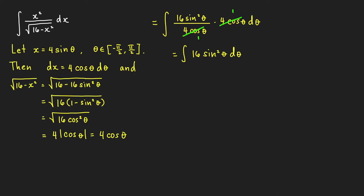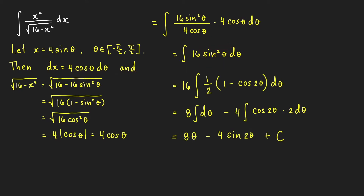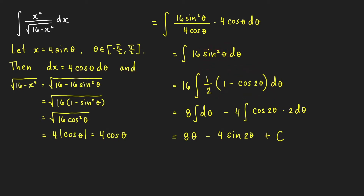To evaluate this integral, we use the half-angle identity for sine squared theta, which tells us that sine squared theta equals one-half of the quantity 1 minus cosine 2 theta. We can still simplify and cancel, and the constant factor becomes 8.